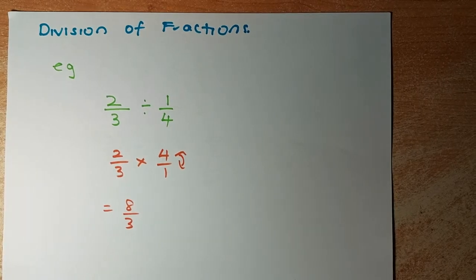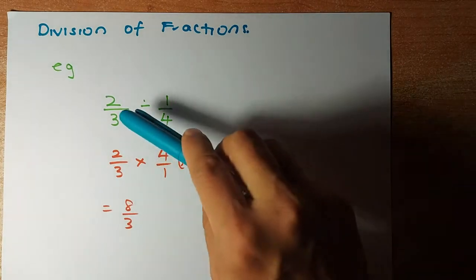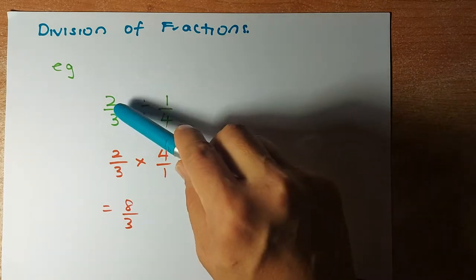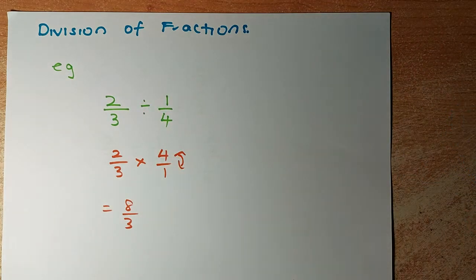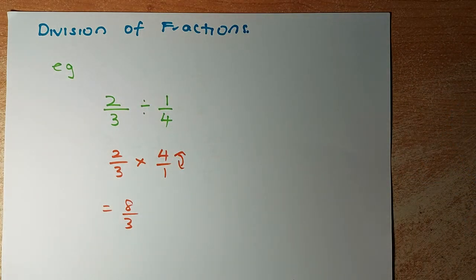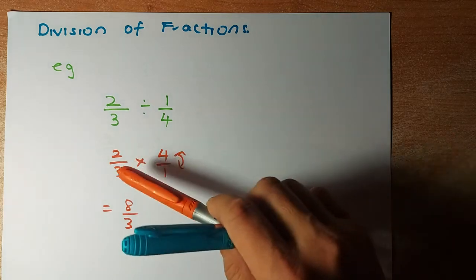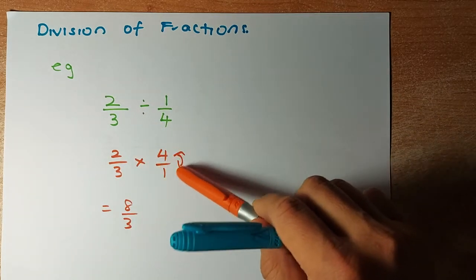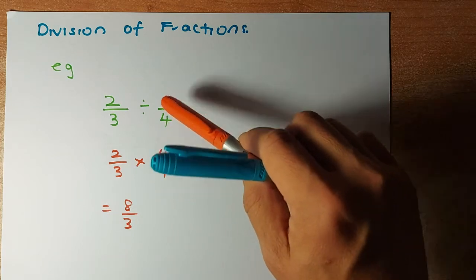Today I'm going to tell you why when you divide a fraction, for example, two-thirds divided by one-quarter, when you are in year 9 or year 10, your teacher says you need to change the division to multiply and you swap the numerator and denominator round.